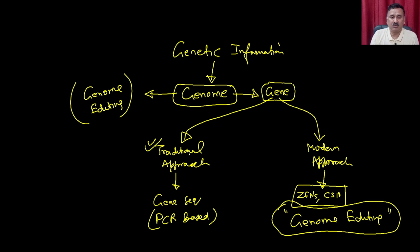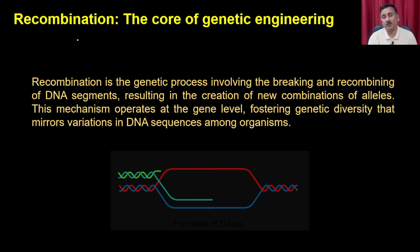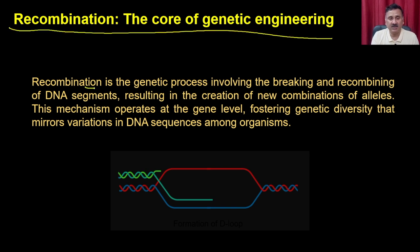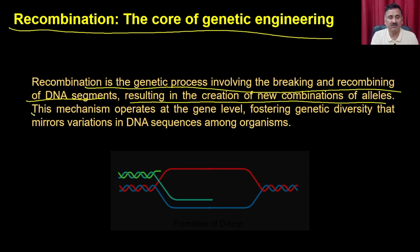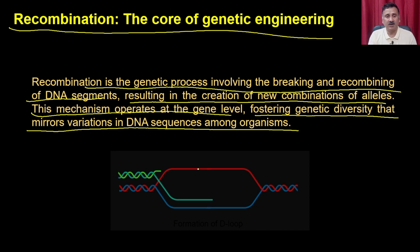The traditional approach is mostly based on genome sequences and also depends on the basic phenomena of recombination. Recombination is the core of genetic engineering — it is a genetic process involving the breaking and recombining of DNA segments, resulting in the creation of new combinations of alleles. This mechanism operates at the gene level, fostering genetic diversity that mirrors variation in DNA sequences across organisms.